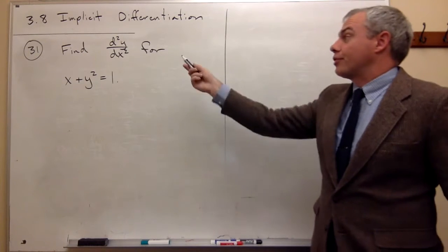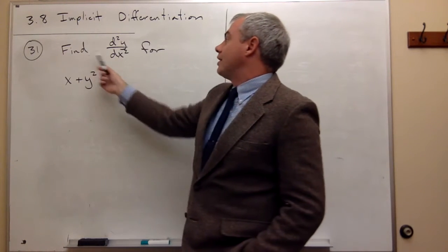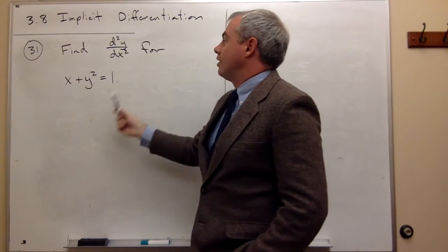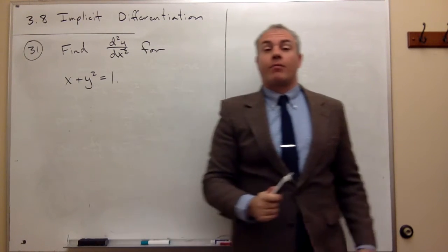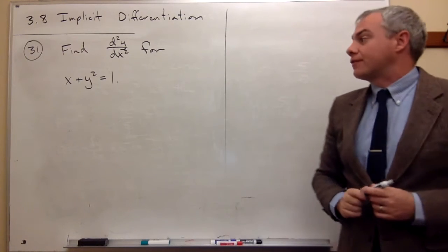Now let's take a look at problem number 31. We want to find the second derivative of y for this curve x plus y squared equals 1. And for practice, we're going to use implicit differentiation.